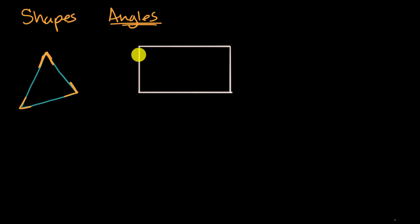Well, we can see the angles. We have one angle here, another angle here. So two, three, and four. So not only does a rectangle have four sides, it also has four angles.